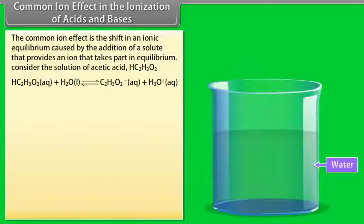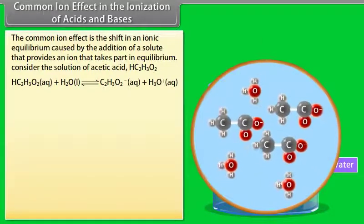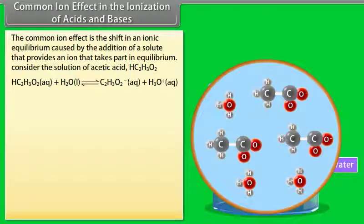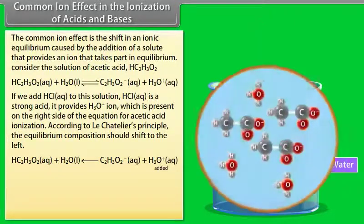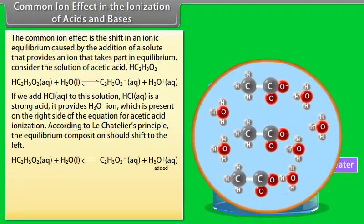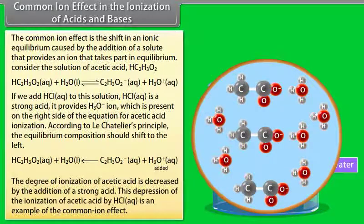Common ion effect in the ionization of acids and bases: The common ion effect is the shift in an ionic equilibrium caused by the addition of a solute that provides an ion taking part in the equilibrium. In a solution of acetic acid, if HCl is added, it provides H₃O⁺ ions. According to Le Chatelier's principle, the equilibrium shifts to the left, decreasing the degree of ionization of acetic acid. This depression of ionization by HCl is an example of the common ion effect.